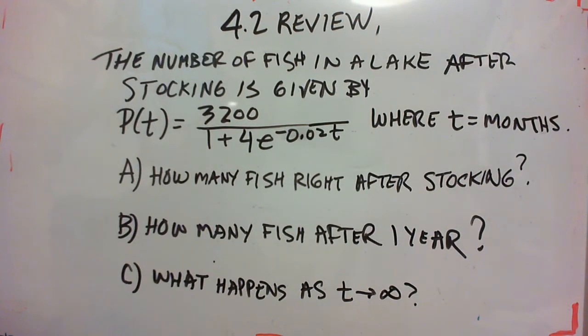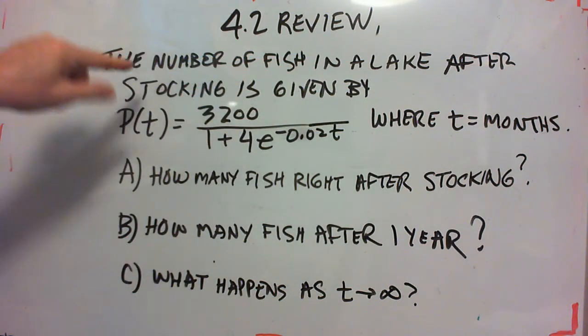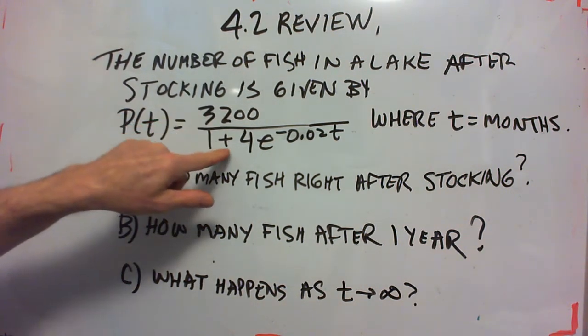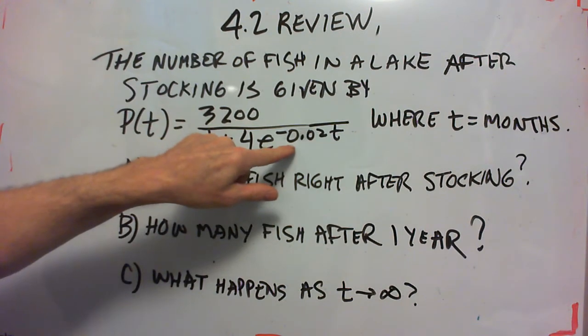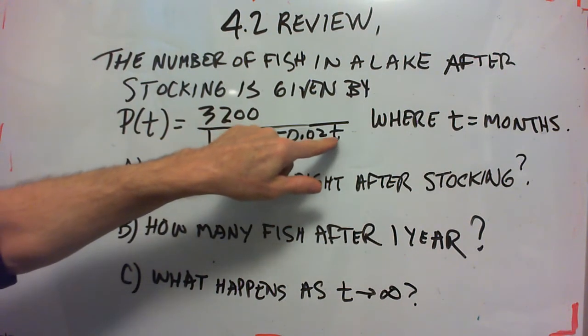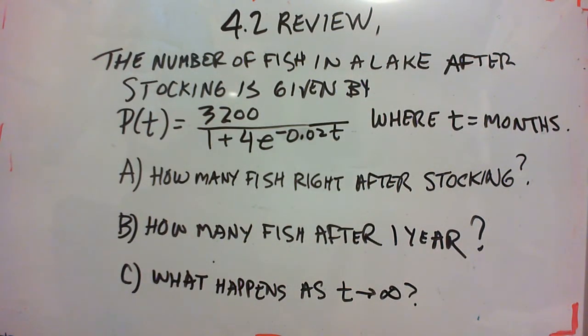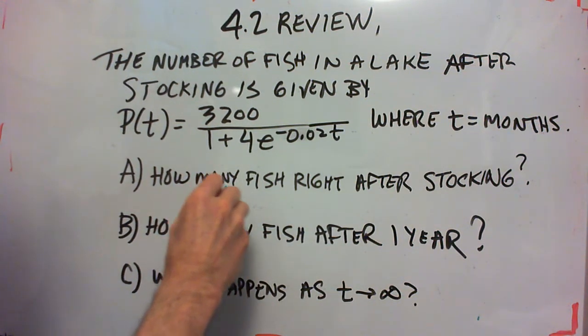Okay the next problem is like number 4 of the homework and also like one of the WebAssign problems. The number of fish in a lake after stocking it with fish is given by p as a function of t equals 3200 over 1 plus 4 e to the negative 0.02 t, where t is months after stocking. Question A: how many fish were in this lake right after stocking? Well right after stocking, immediately after stocking, t is 0.